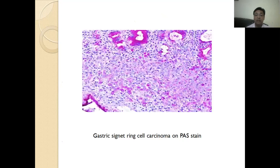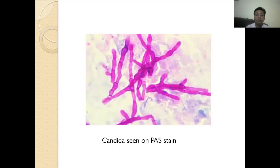This is a slide showing gastric signet ring cell carcinoma stained with PAS stain. You can see the magenta color of Candida seen on PAS stain.